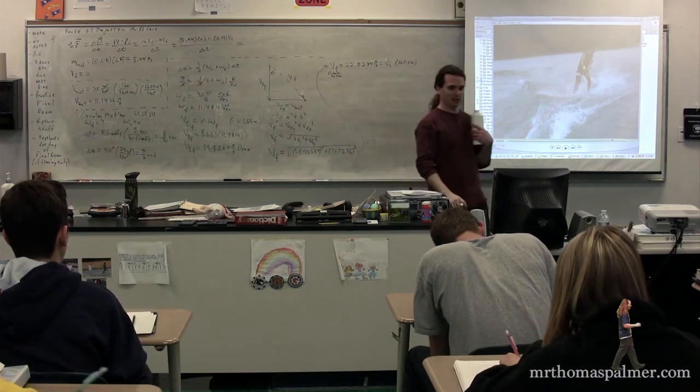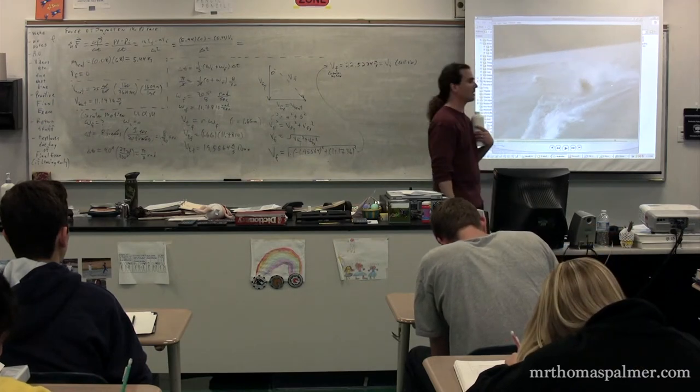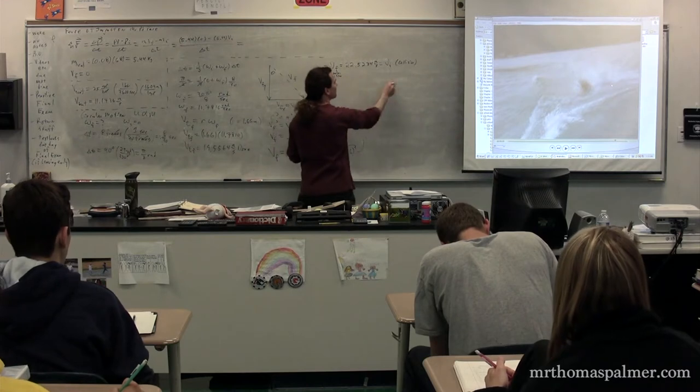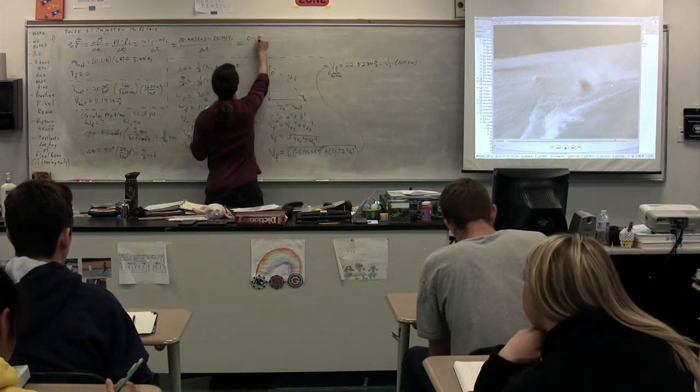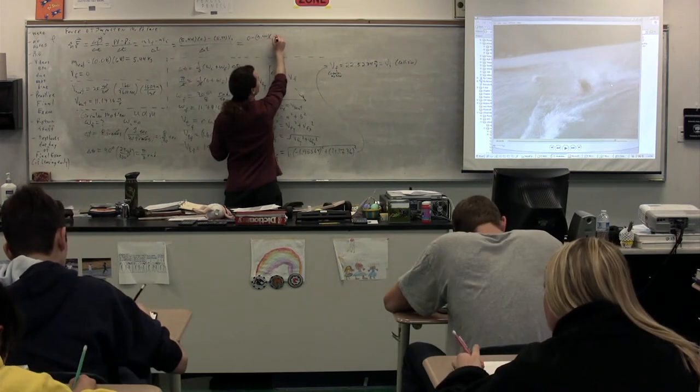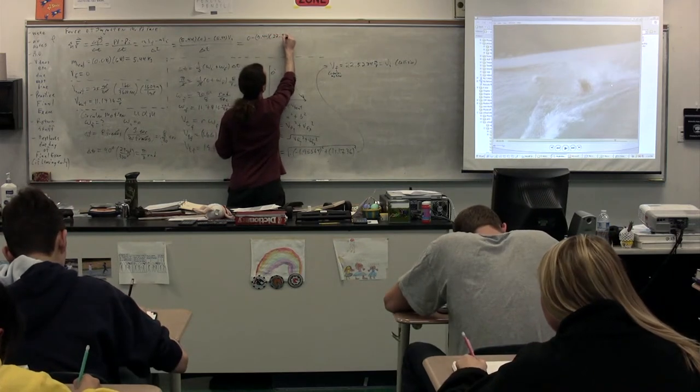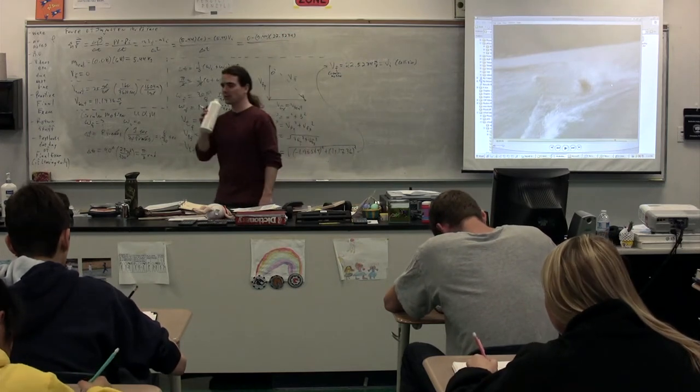Because it is at this moment, that moment right there, which is the final velocity for the circular motion, but it's also the initial velocity for the collision. So we can substitute that up here. 0 minus 5.44 multiplied by our initial velocity for the collision, 22.5234, divided by we need the change in time during the collision.